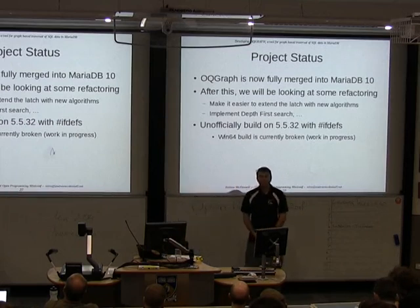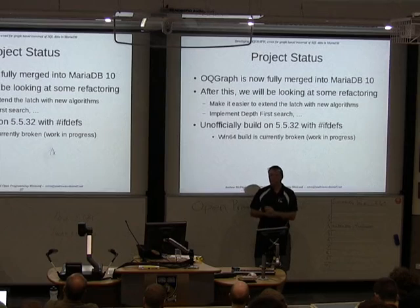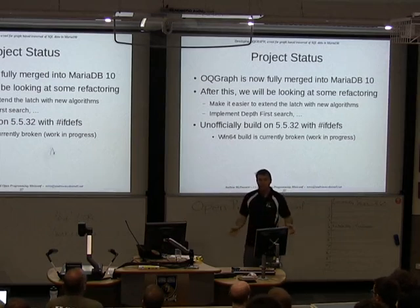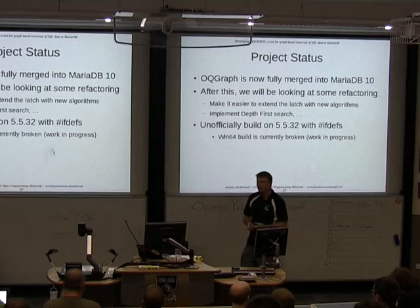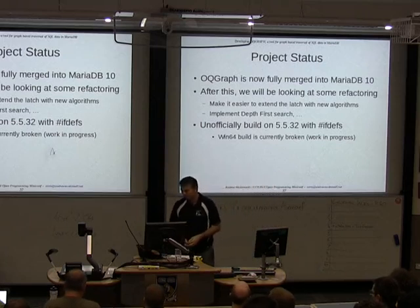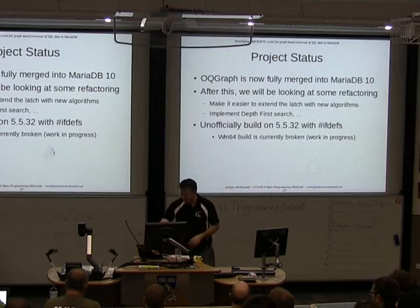Looking forward, we want to implement a few more graph algorithms. We also need to tidy up the prototype code as it's still fairly rough. It would be handy to have a plugin-for-the-plugin model so anyone could add new graph algorithms without needing to know the full MariaDB plugin API. And the Windows build is currently broken, though most people probably don't care about that yet.